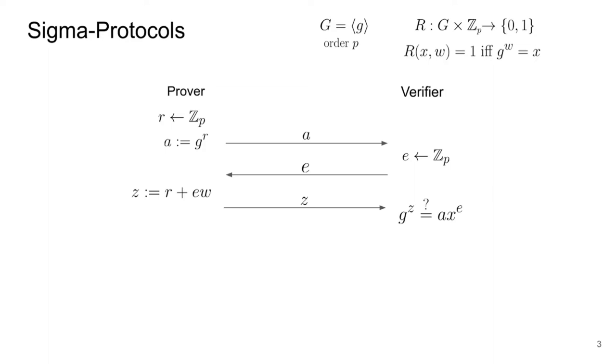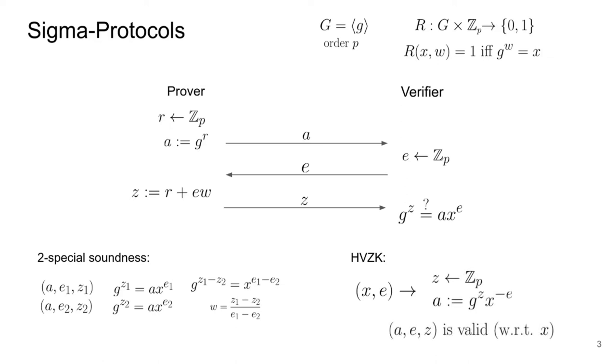This protocol is two special sound because after a is transmitted, a prover who does not know w will only be able to answer correctly to one value of e among all the values in set P. In other words, and more formally, this protocol is two special sound because given two transcripts with the same first message a that satisfies the verification equation, the witness can be extracted in polynomial time. This protocol is also honest verifier zero knowledge because given an instance x and a challenge e, one can efficiently produce a transcript that is valid with respect to x, and identically distributed to the transcript that two honest parties would produce.